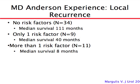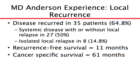If you have none of these five risk factors, average survival is very good at 111 months. With one risk factor it's about three and a half years, and with more than one risk factor it's typically less than a year. Disease recurred in about two-thirds of patients after aggressive resection. Isolated relapse in that same location was about 15%. Recurrence-free survival was about one year on average, and overall cancer-specific survival was about five years in this subpopulation.